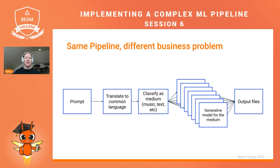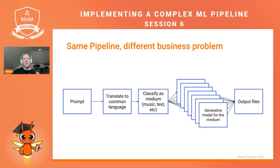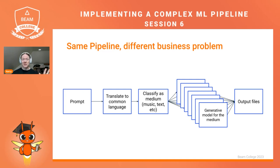Another way you could use this is as a generative pipeline. The user gives you a prompt — something they want your system to do or make. Translating to a common language as the first step is something you have to do in many global contexts, and machine learning models are the strongest way to translate while keeping fidelity to the user's original intent. Once you have that common language, you can use a more powerful, more accurate classifier to determine what the user wants as output — text, a song, a picture, computer code — and feed it to the appropriate model.